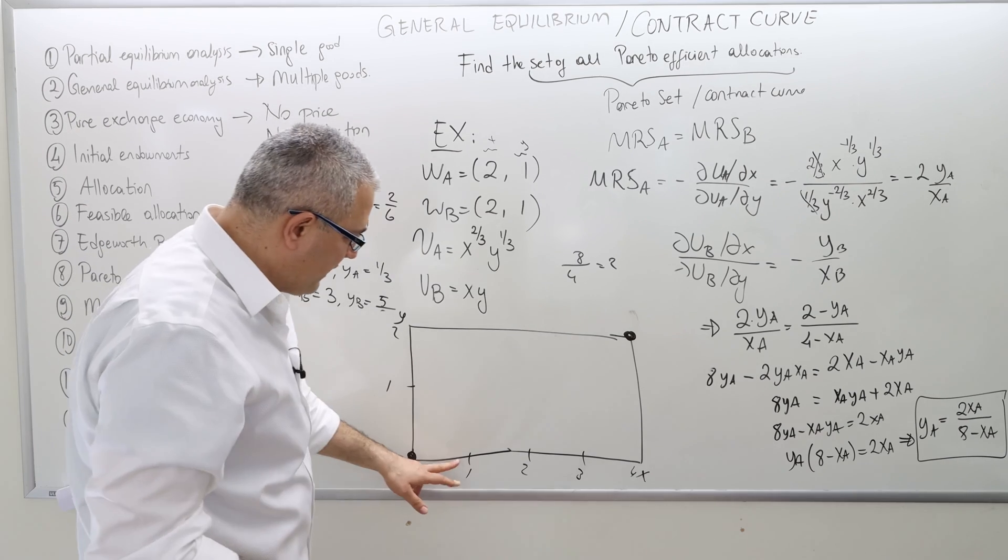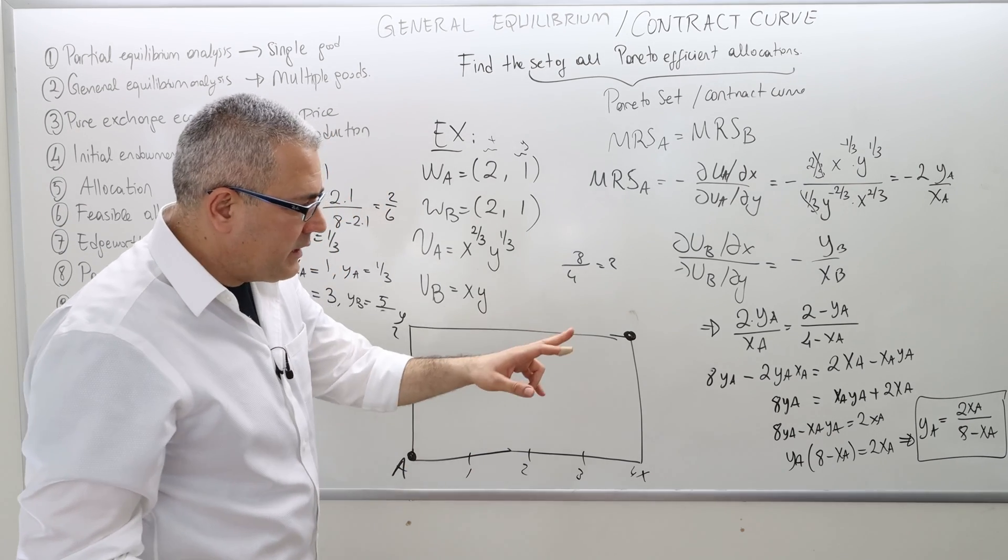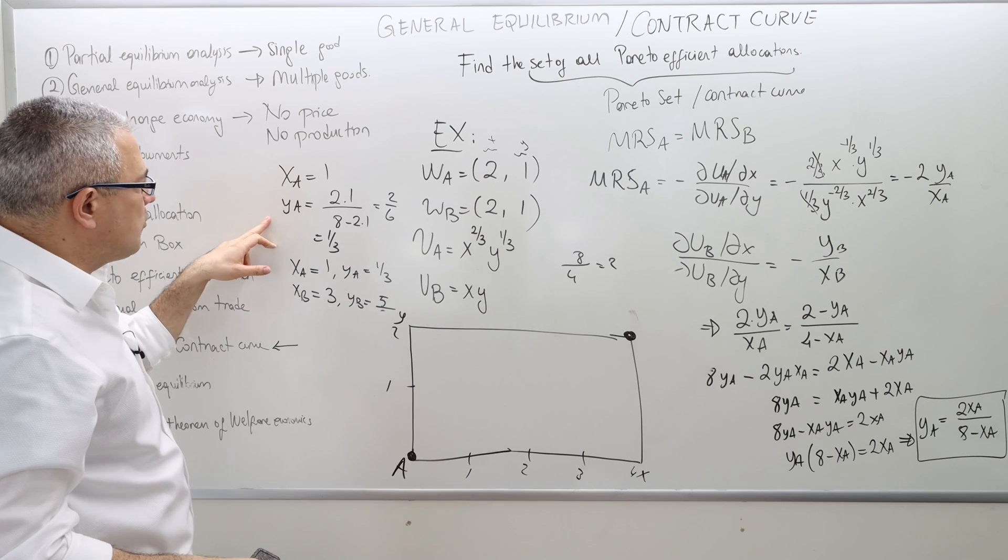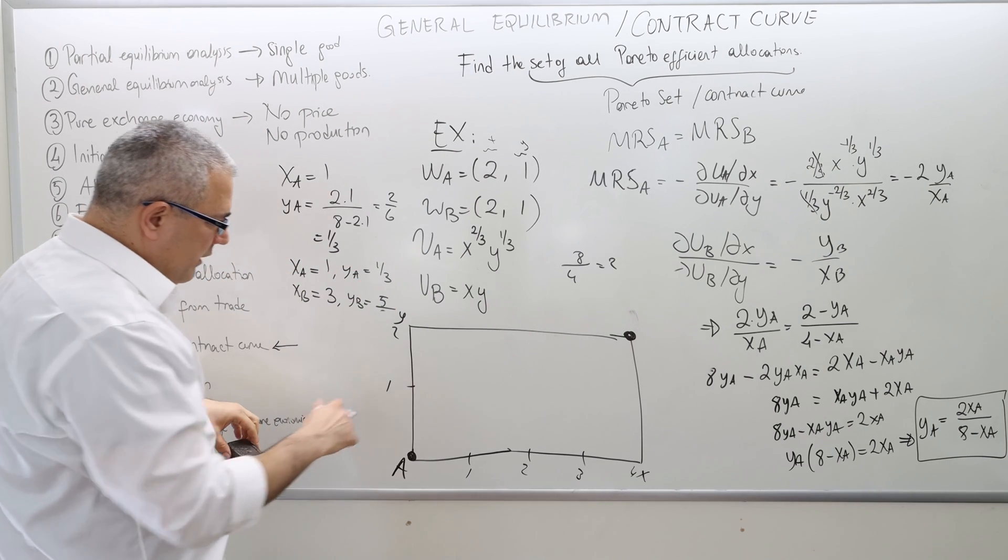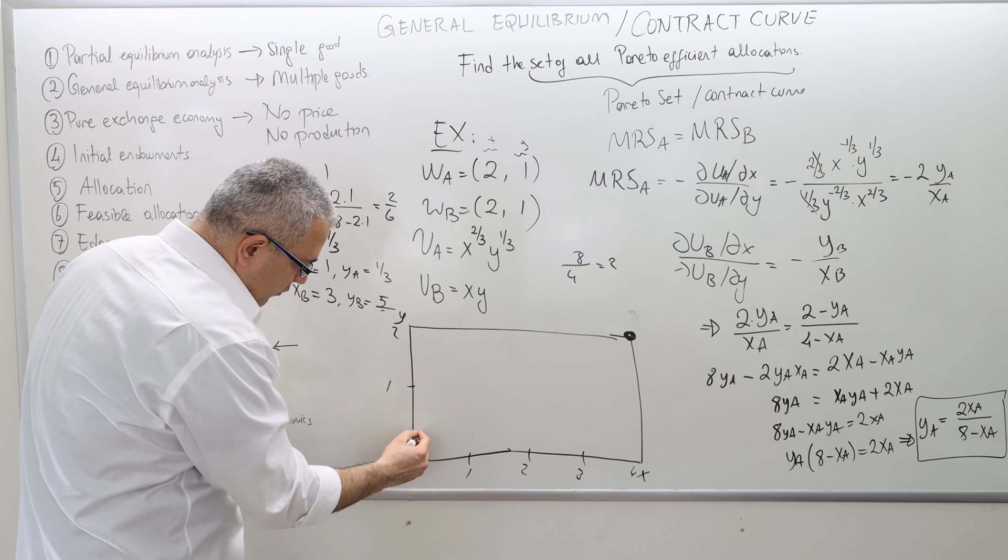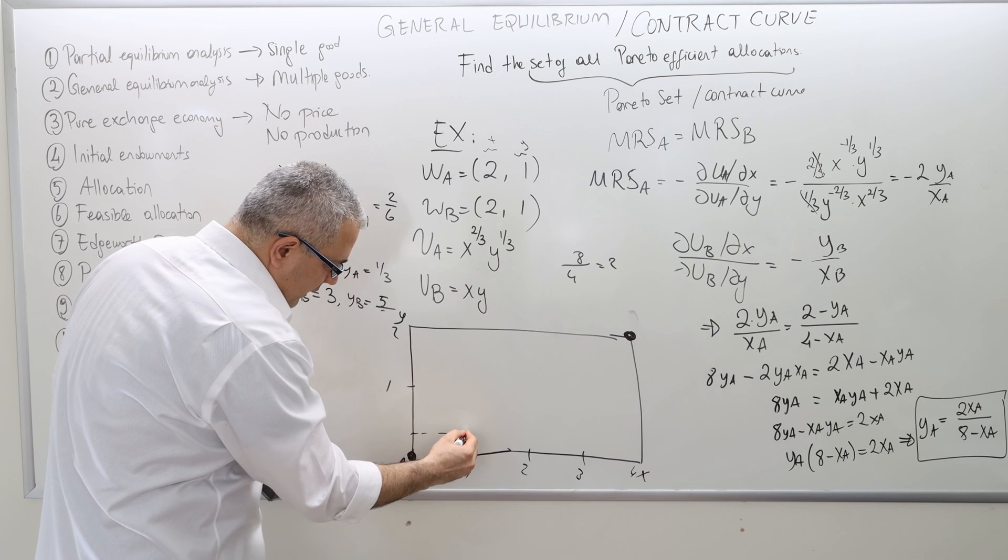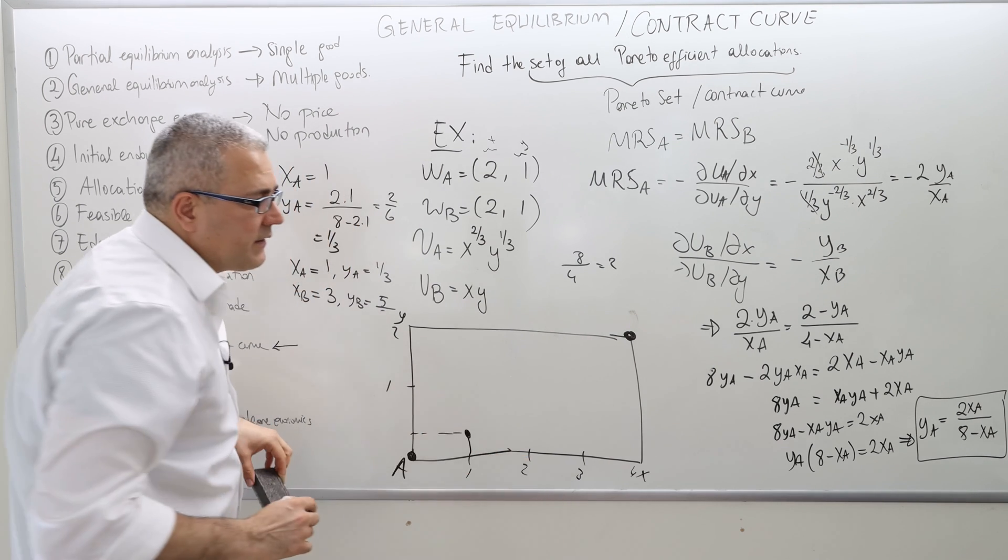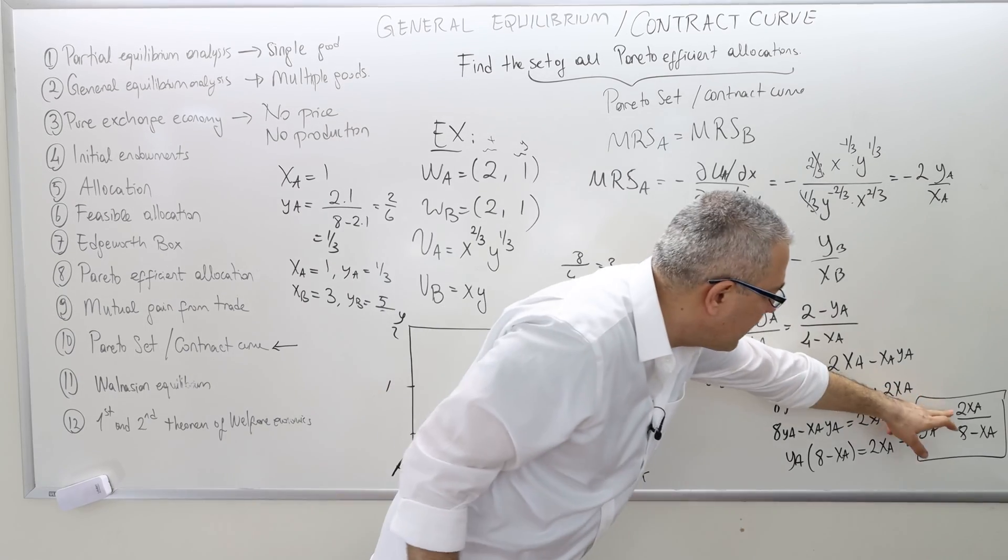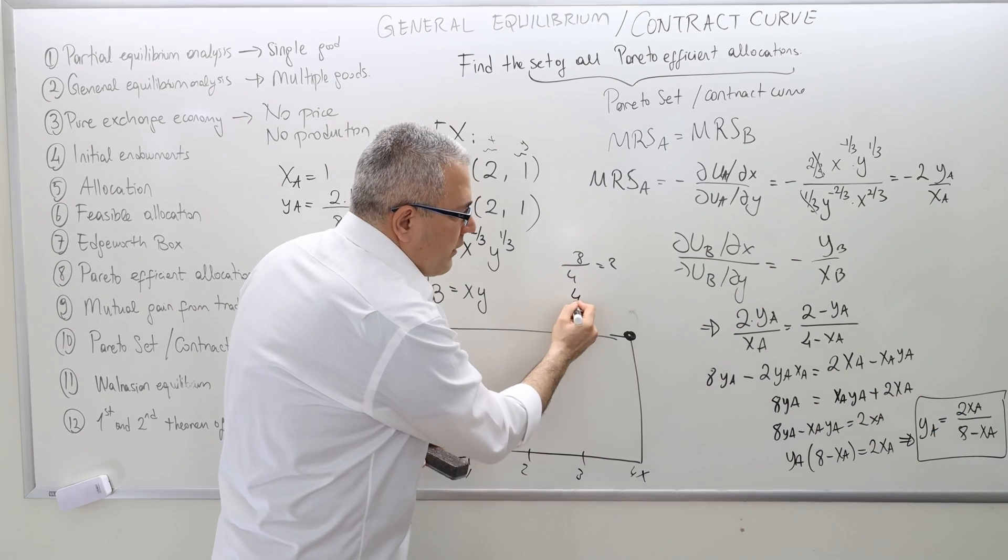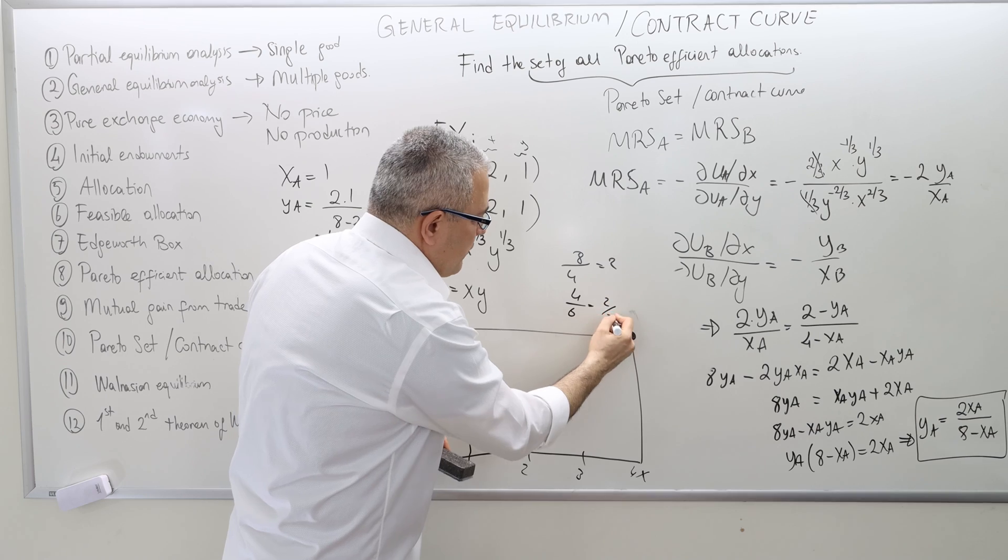What else? For example, if x_A is 1, we already found that y_A should be 1/3. So 1/3 is somewhere here. So something like this. If x_A is 2, this is going to be 4 divided by 6. So it's going to be 2/3. And 2/3 is still less than 1, so somewhere here.